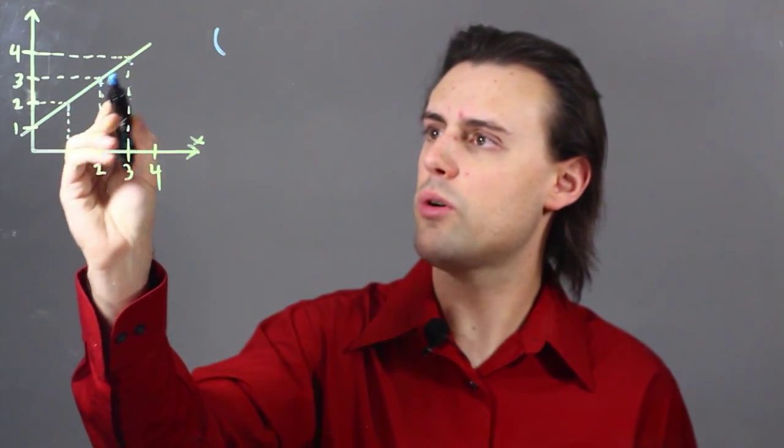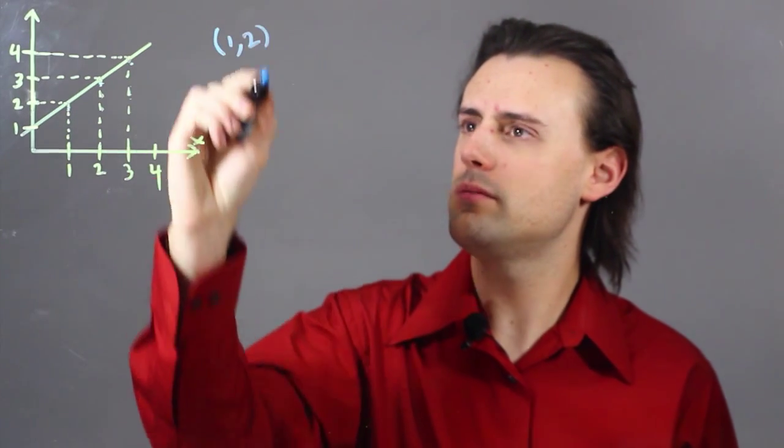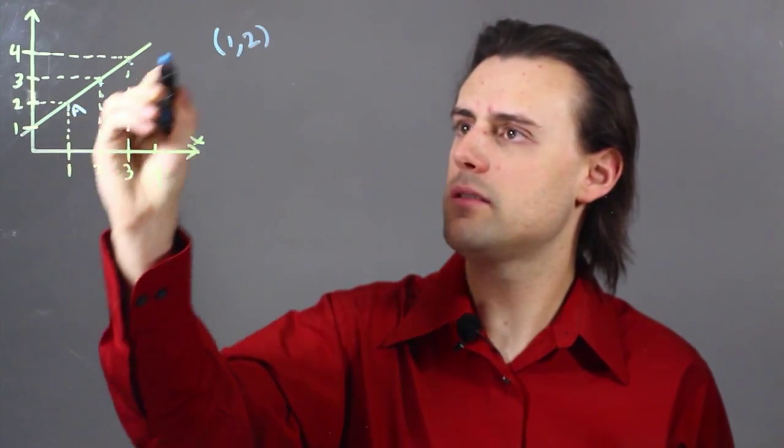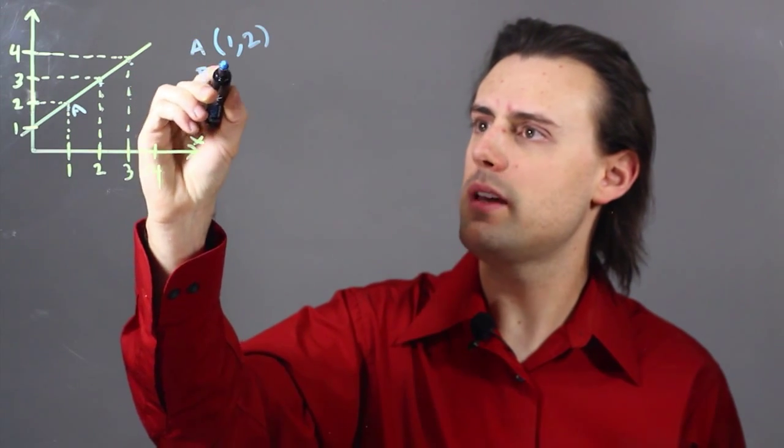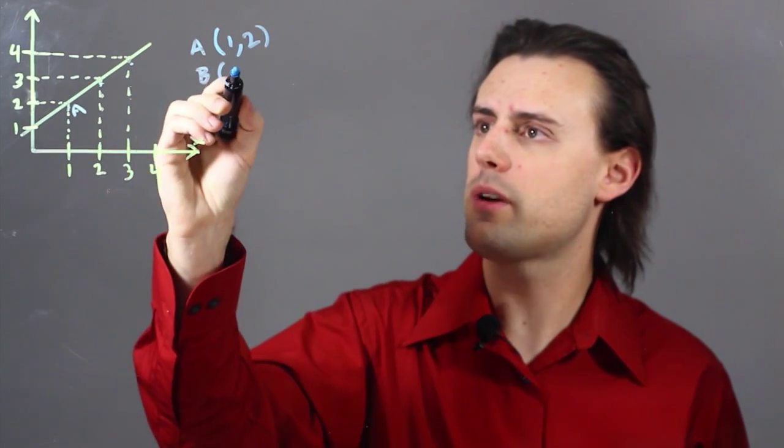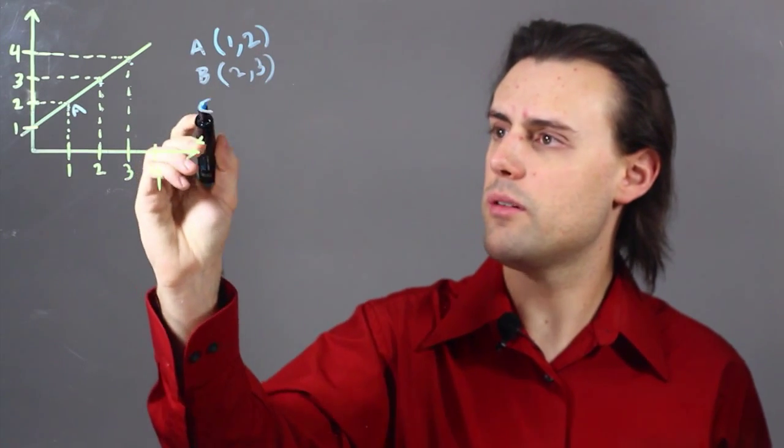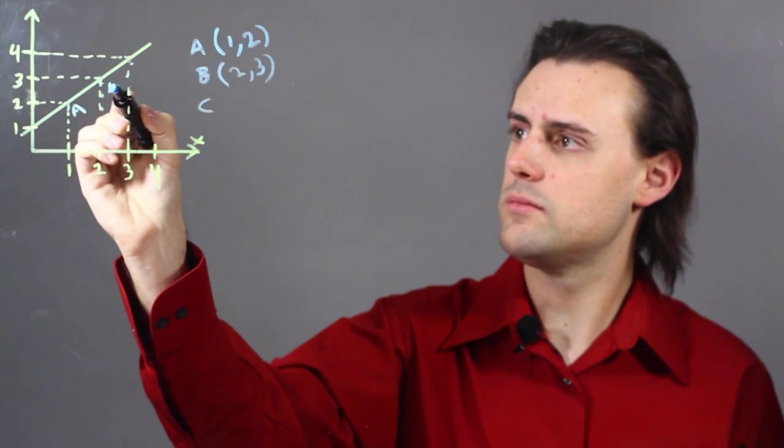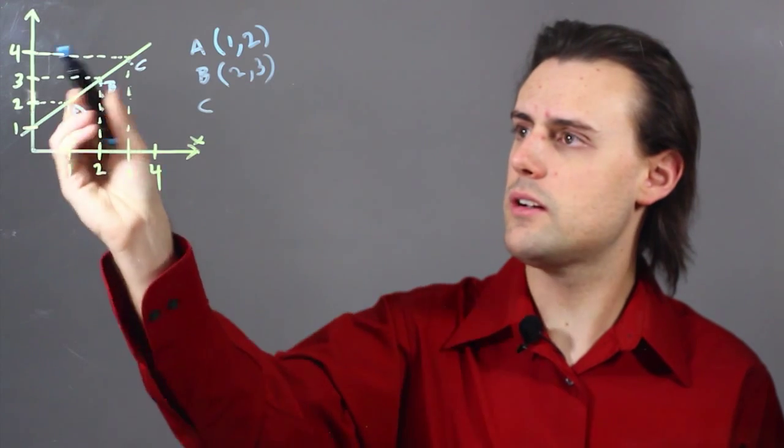The different coordinates would be 1, 2 for point A, and then for point B, I have 2, 3, and then for point C, I have 3, 4.